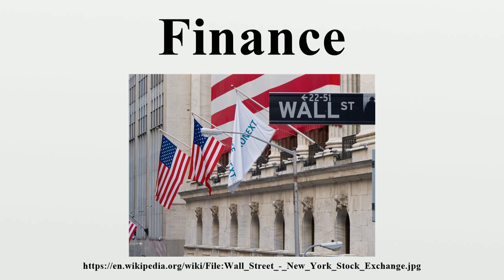Financial economics, at least formally, also considers investment under certainty, and hence also contributes to corporate finance theory. Financial econometrics is the branch of financial economics that uses econometric techniques to parameterize the relationships suggested. Although closely related, the disciplines of economics and finance are distinctive. The economy is a social institution that organizes a society's production, distribution, and consumption of goods and services, all of which must be financed. Economists make a number of abstract assumptions for purposes of their analyses and predictions.